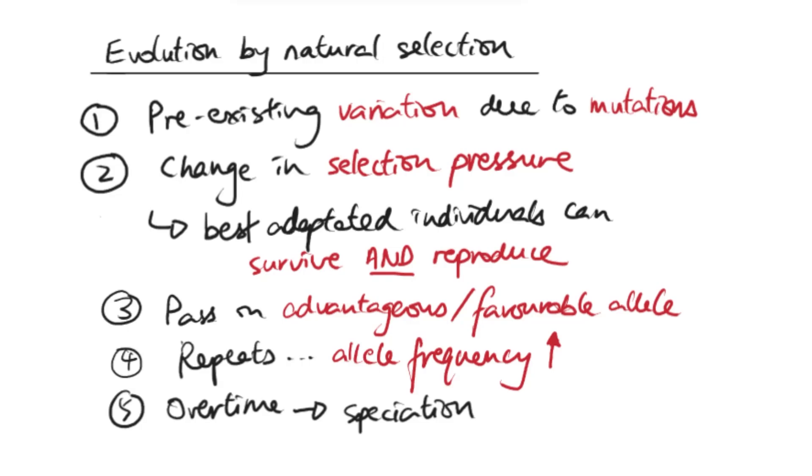These are the few steps that you would refer to when talking about evolution of any organism. Within a group, you can say there are mutations happening causing pre-existing variation. But then there's a change in the selection pressure or a new selection pressure came in, causing some of the individuals that are best adapted to survive and reproduce, passing on the favorable allele.